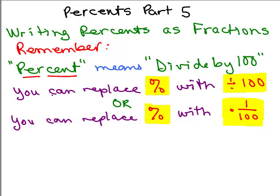One way of getting rid of a percent and writing as a fraction is remembering that you could replace the percent symbol with divided by 100, or you could replace the percent symbol with times 1 over 100, since dividing by 100 is the same thing as multiplying by the fraction 1 over 100. We're going to do a little bit more complicated ones on this video.